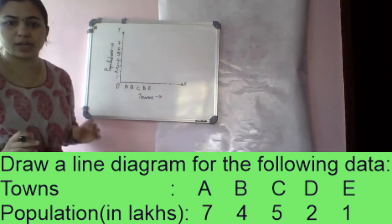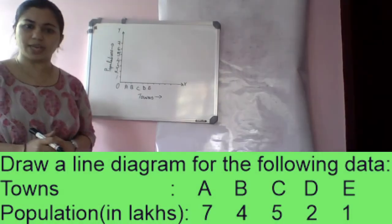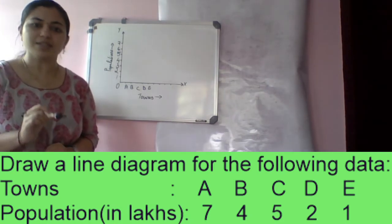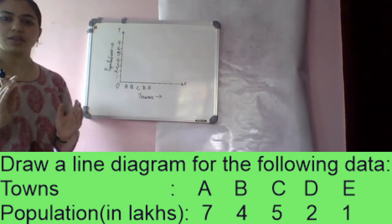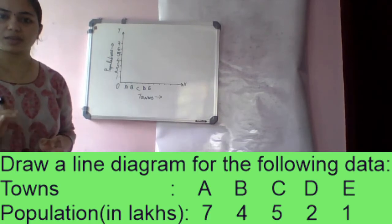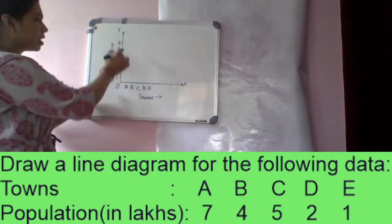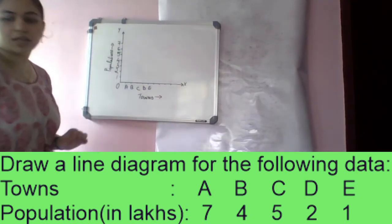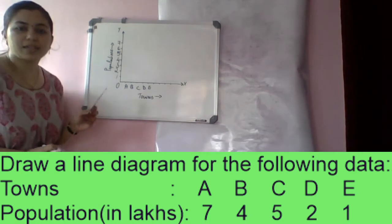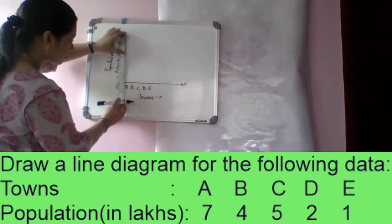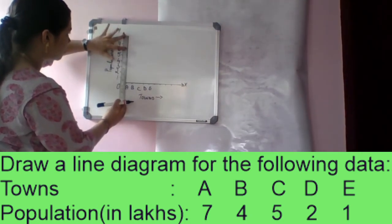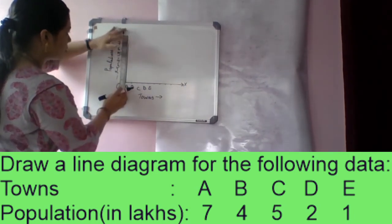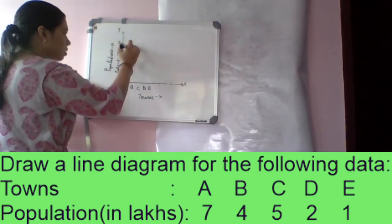First, A is 7 lakhs. Plot 7 length for A. So this is the first line.